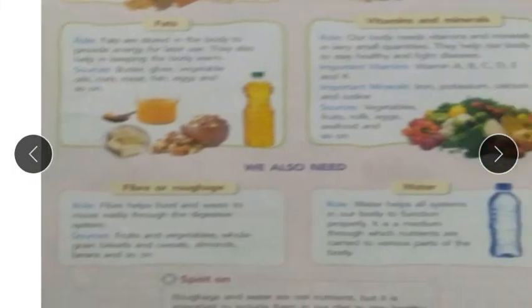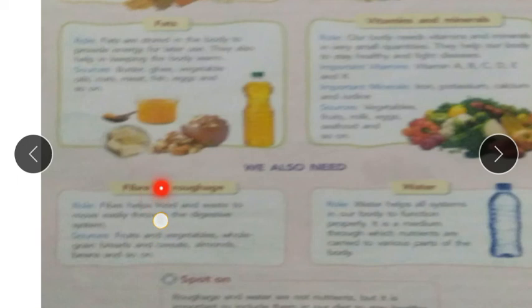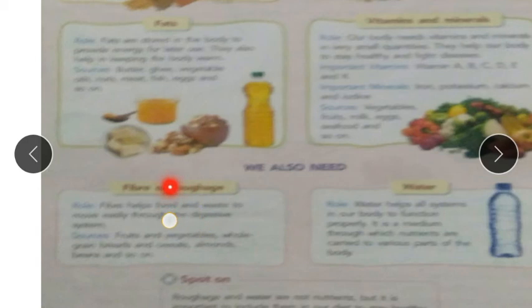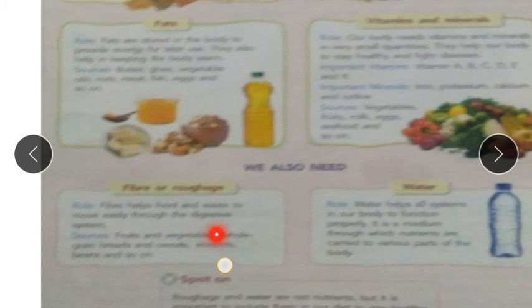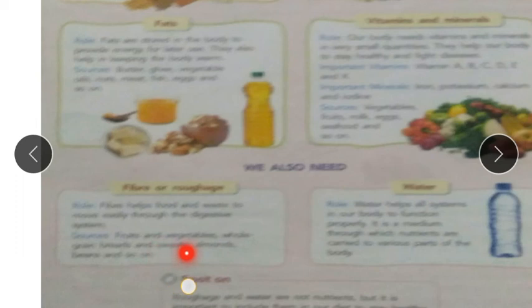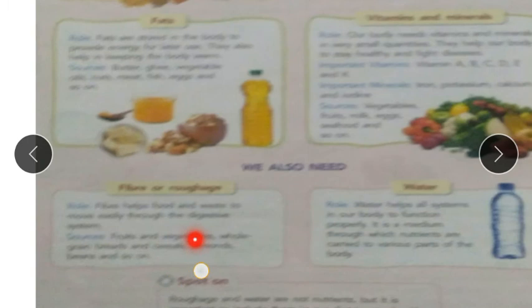Next is fiber and roughage. Fiber helps food and waste to move easily through the digestive system. Sources of fiber include fruits, vegetables, whole grain breads, cereals, almonds, beans, and so on.